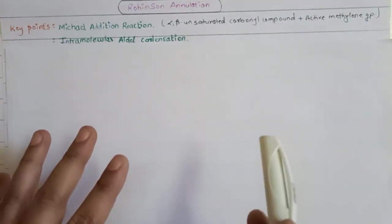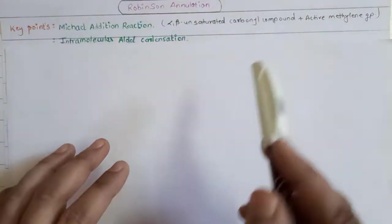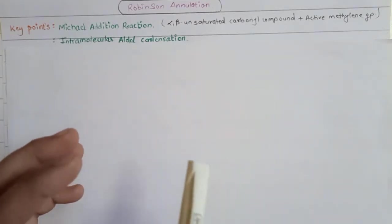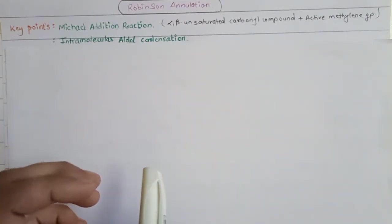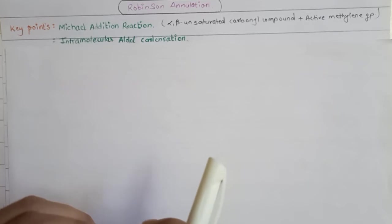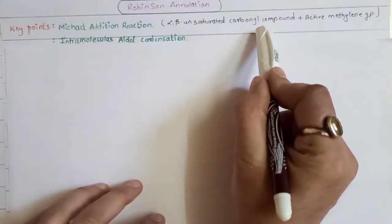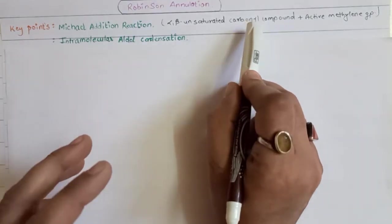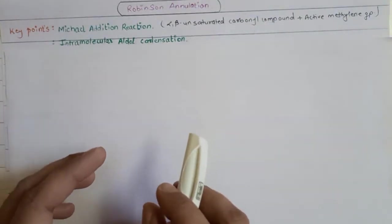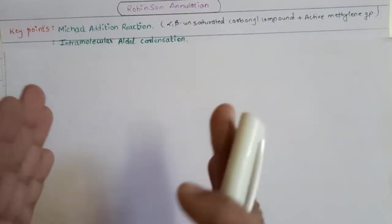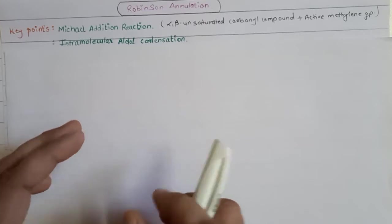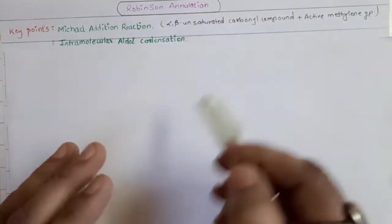In Michael addition, your first organic compound is an alpha-beta unsaturated carbonyl compound combined with any active methylene group. The nucleophile enolate is going to be added across the beta carbon of the double bond of an alpha-beta unsaturated carbonyl compound. Through conjugate addition, meaning 1,4-addition, you will get the product, which will then be protonated to give a 1,5-diketone.